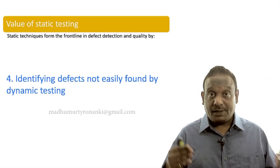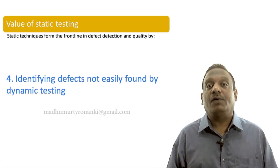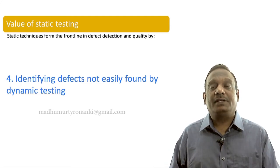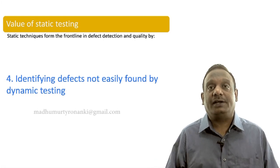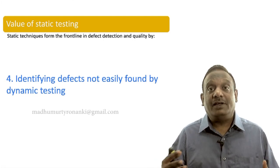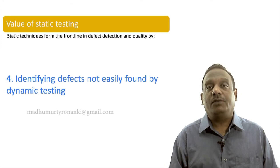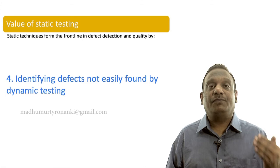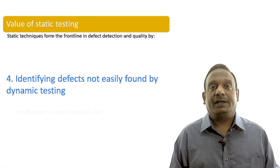The fourth value is identifying defects not easily found by dynamic testing — especially consistency, ambiguity, and missing functionality. These are the types of defects that cannot be found easily by dynamic testing, but can be fairly easily found early in the lifecycle by static techniques.